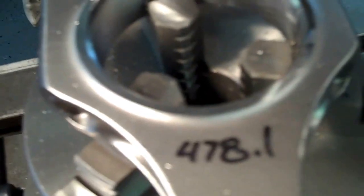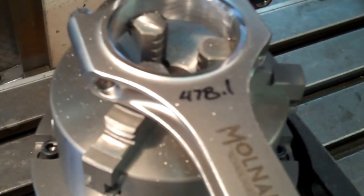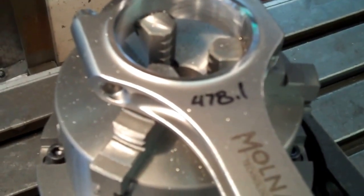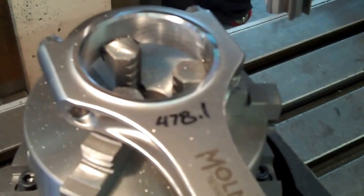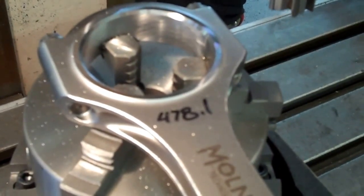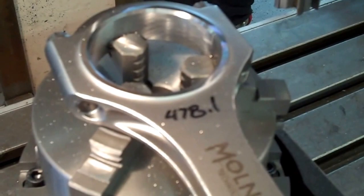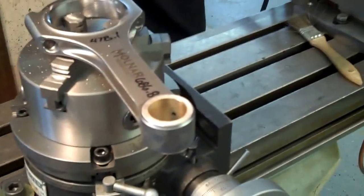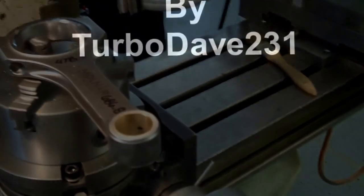Now I'll take this and put a bearing back in it and put it on the crankshaft and re-measure and I should be right where I need to be. The six that I had before plus five ought to put me at about eleven thousandths, you know, nice on the tight side of that spec. Alright, hope you found it interesting. This is Turbo Dave 231. Take care. Bye now.